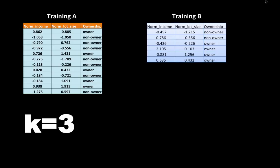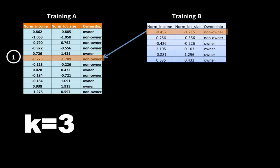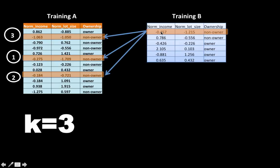For k equals 3, we consider every case in the Training B partition and find its three nearest neighbors in the Training A partition, then classify the case accordingly. For the first case, the closest neighbor happens to be a non-owner, the next closest is also a non-owner, and the final closest neighbor is also a non-owner. The neighbors were found by calculating the distance from this case to each case in Training A.